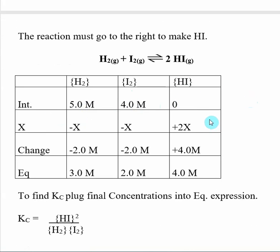Looking at the stoichiometry, as the reaction goes to the right it is using up H2 and I2 to make HI. The relative stoichiometry says that for every one H2 I use up, I use up one I2, and then I make two HI. Thinking about it in terms of X values, that means for every amount X of H2 I'm using up, I'm using up X of I2, and I'm making 2X of HI.